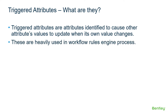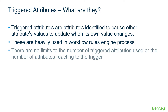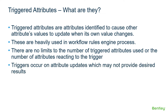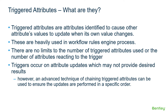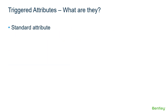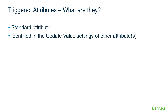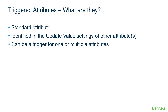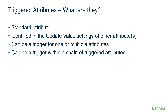Triggered Attributes are heavily used in the workflow rules engine process. There are no limits to the number of triggered attributes used or the number of attributes reacting to the trigger. Triggers occur on attribute updates, which may not always provide desired results, but an advanced technique of chaining triggered attributes can be used to ensure updates are performed in a specific order. Triggered attributes are standard attributes identified in the update value settings of other attributes.